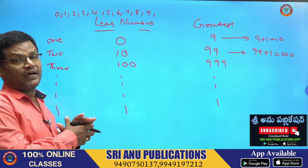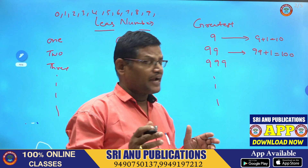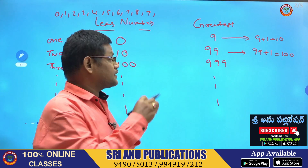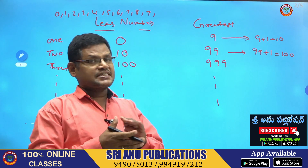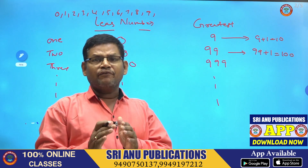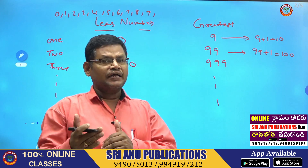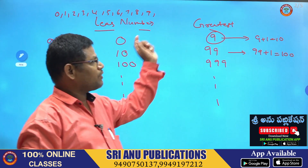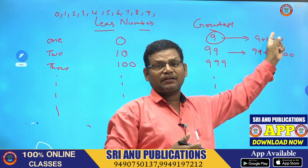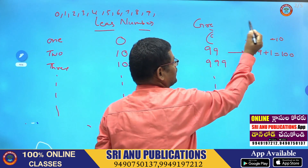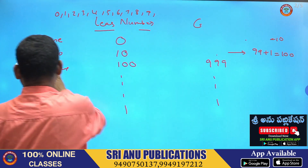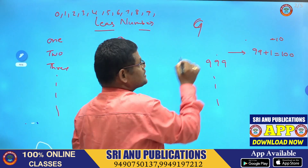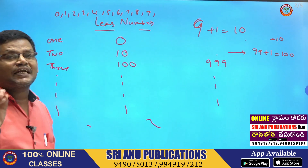In an examination they may ask: what is the greatest positive number? This can be written using the concept of successor. What is the meaning of successor? For any number, if we add 1, that result is called the successor. For example, suppose 9 is the number; 9 plus 1 equals 10, so 10 is called the successor of 9. The successor of 9 is 10, which is the least two-digit number.